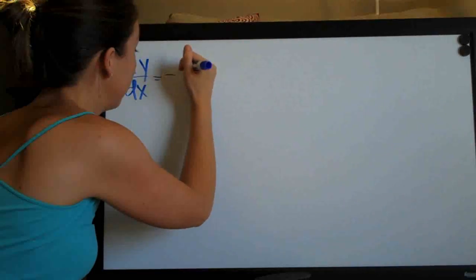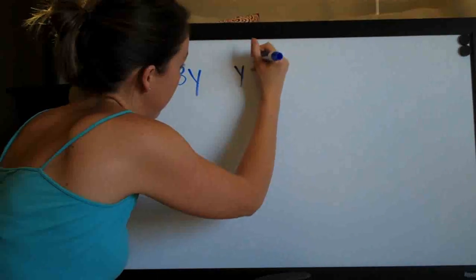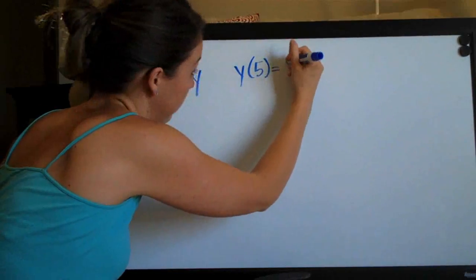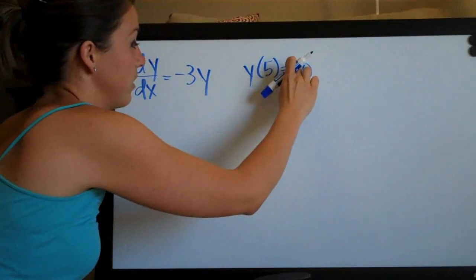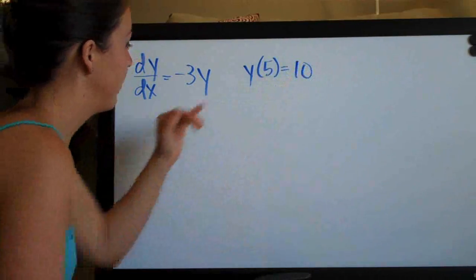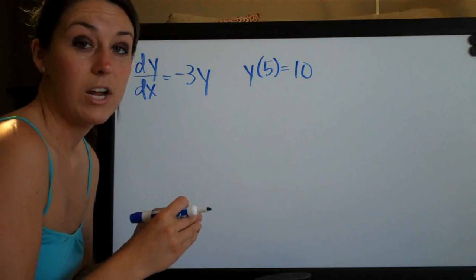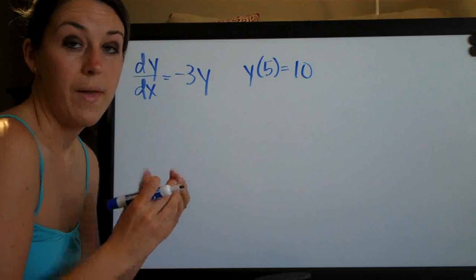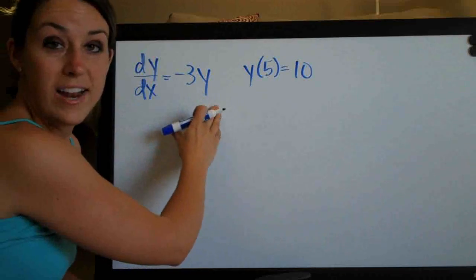The differential equation that we're given is dy/dx equals negative 3y and we're given an initial condition of y of 5 equal to 10. So whenever we're solving differential equations with an initial condition like this, the first thing we're always going to want to do is separate the variables in the function, x on one side and y on the other. We usually have y on the left and x on the right.